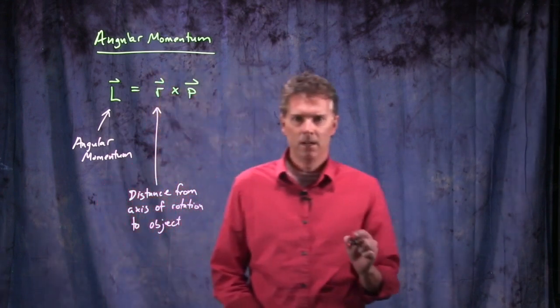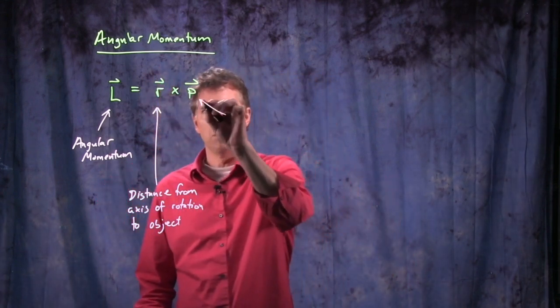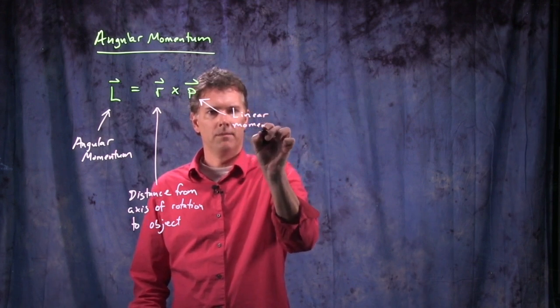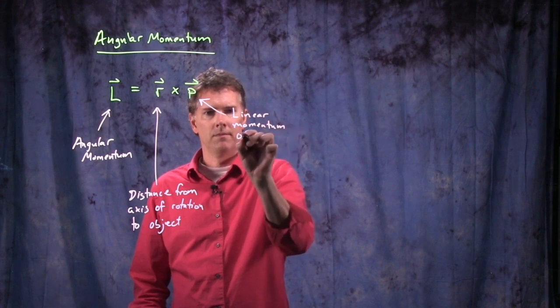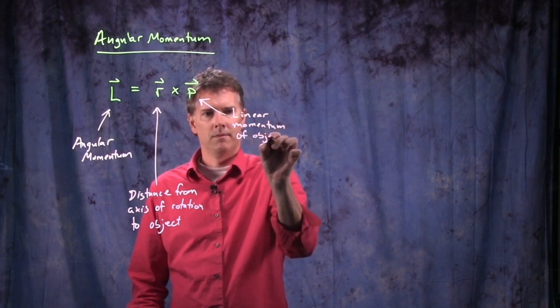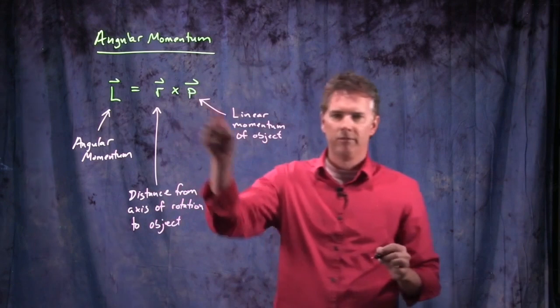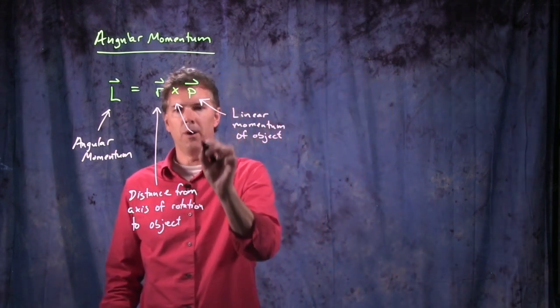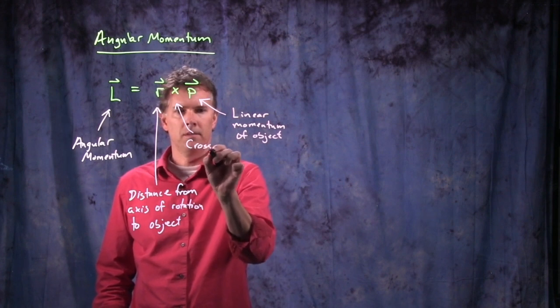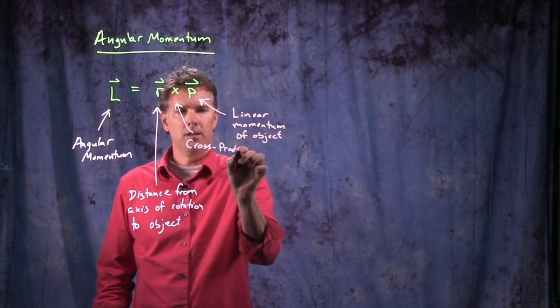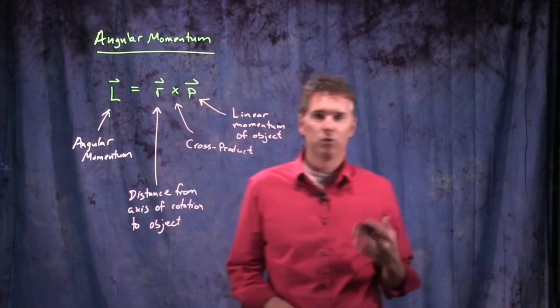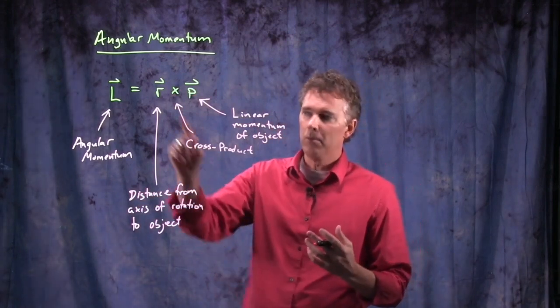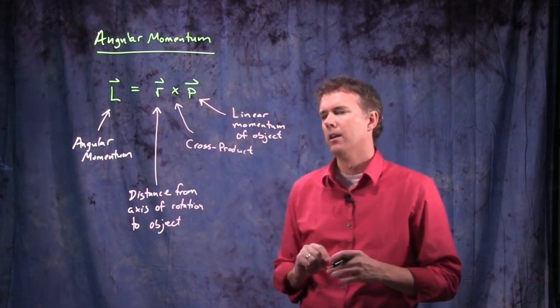P is the linear momentum of that object. What about this funny-looking X thing? This is actually called the cross product, and the cross product is a mathematical tool for figuring out how to combine two vectors and still maintain a vector quantity on the left-hand side.